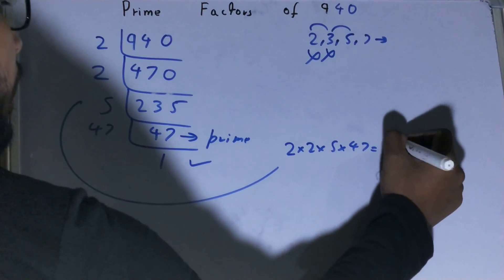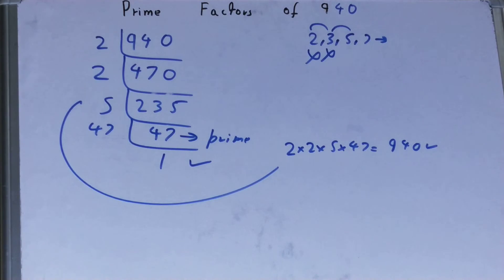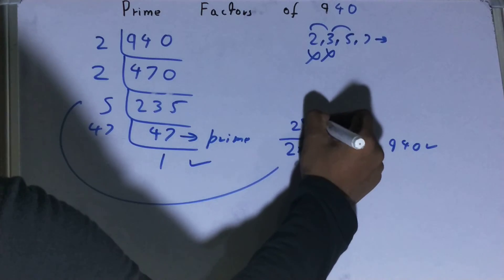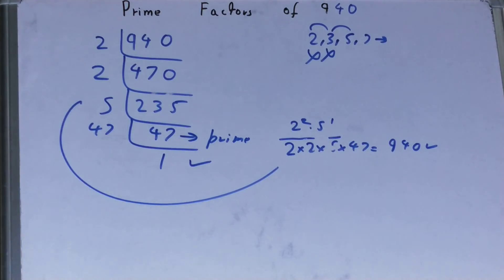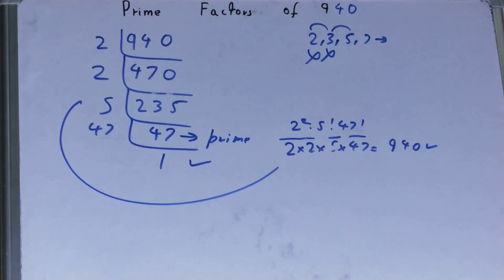You can also rewrite it in a different way. You have 2 times 2, so you can write it as 2 raised to power 2. You have 1 time 5, so you can write it as 5 raised to power 1. You have 1 time 47, so you can write it as 47 raised to power 1. You can write it this way or that way, it's up to you.